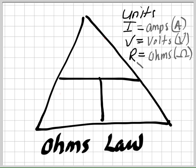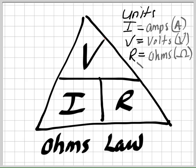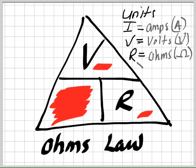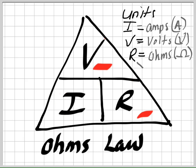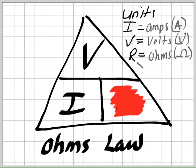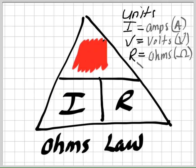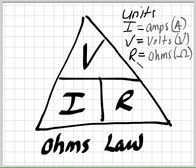Here's how to use the triangle: V equals I times R. If you know the voltage and the resistance, cover up the I, so I equals V divided by R. If you want to figure out resistance, cover up the R, so R equals V divided by I. And if you want voltage, cover that up: V equals I times R. With this triangle you automatically know which formula to use.